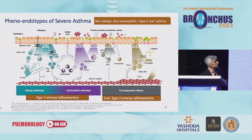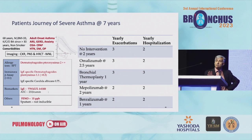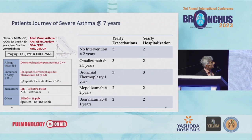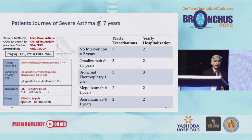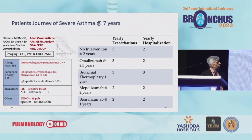I discussed this case yesterday and bring it to the perspective of severe asthma in India. You can see: 68 years, BMI 33, male, asthmatic for 35 years, significant comorbidities — rhinosinusitis, GERD, OSA, hypertension, diabetes, osteoporosis. Imaging all normal. Look at the biomarkers: HDM positive, IgE 778, eosinophils 210, FeNO 15. T2 high or T2 low? IgE or eosinophil?